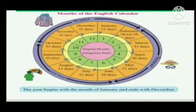Children, these twelve months are divided into three parts, meaning each four months contain one season. That is winter, summer, and rainy season.